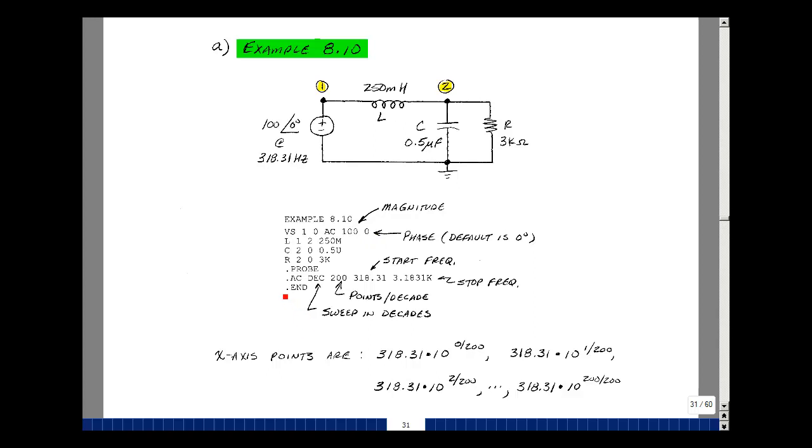So instead of a dot transient analysis, we're going to do a dot AC analysis for the phasor. And then specify four things: the sweep of the x-axis, the number of points per sweep, and then a start and a stop frequency. Now in this problem, I'm only interested in one point, and that's this 318.31 hertz. But to get a graph, I minimally have to have two points. Let's go a little bit farther. Let's put 200 points on the screen so we get a smooth graph.